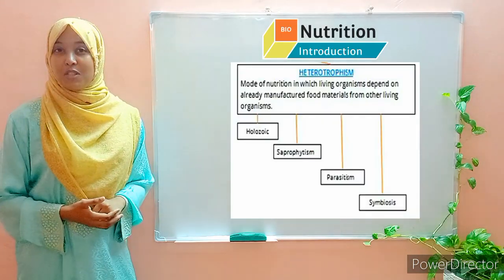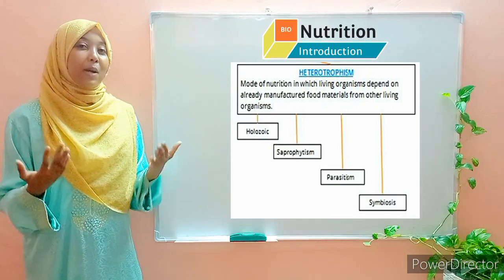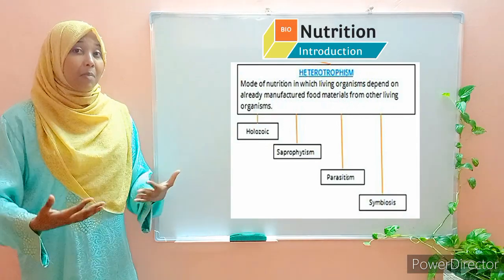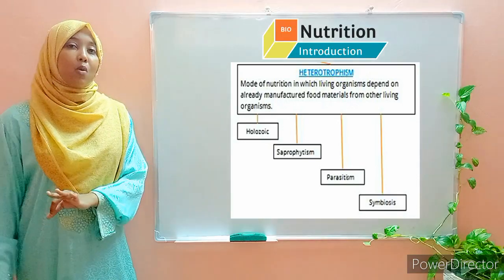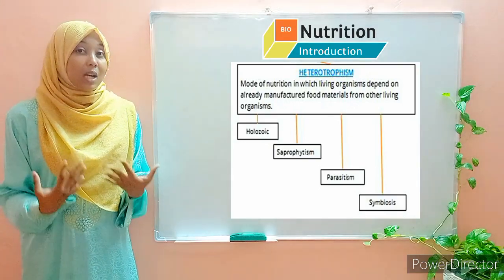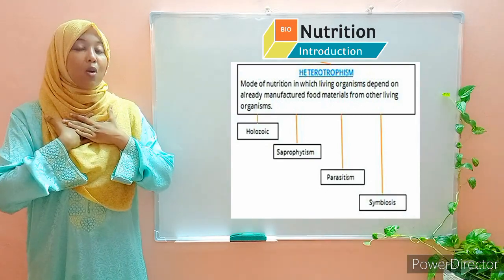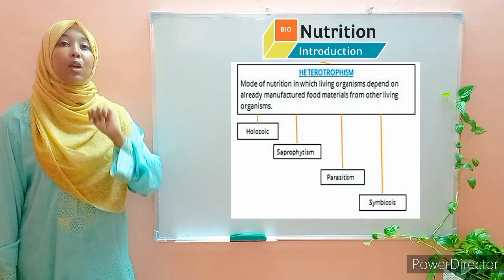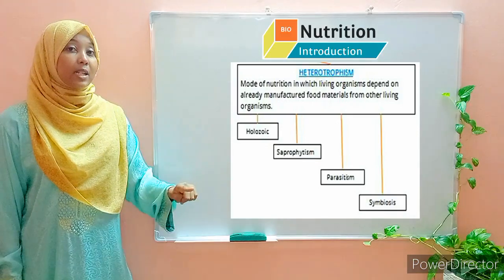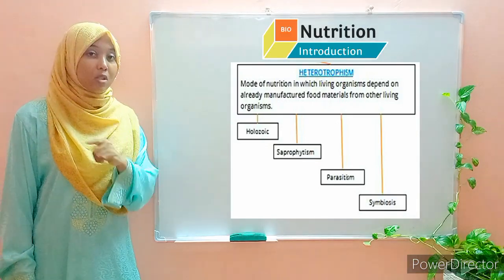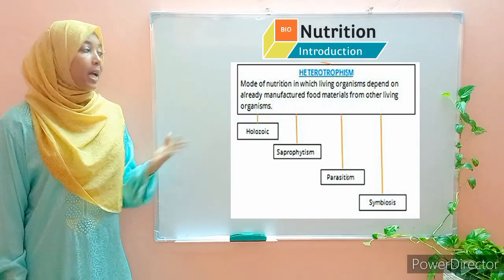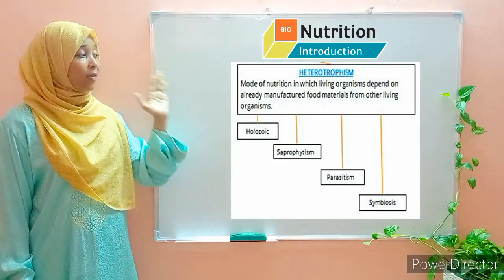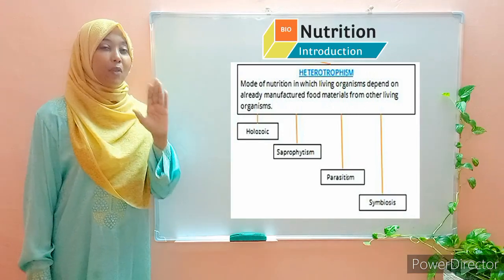Heterotrophism is a mode of nutrition whereby organisms obtain complex food substances from other organisms. They take in ready-made complex food substances because they don't have the ability to manufacture their own. Heterotrophs can be divided into four groups according to the way they obtain their nutrients: holozoic, saprophytism, symbiosis, and parasitism.